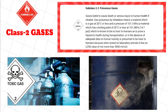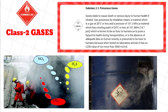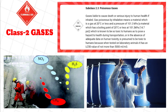Subclass 2.3, Poisonous gases: gases liable to cause death or serious injury to human health if inhaled. Gas poisonous by inhalation means a material which is a gas at 20°C or less and a pressure of 101.3 kilopascals, or a material which has a boiling point of 20°C or less at 101.3 kilopascals (14.7 pounds per square inch), which is known to be so toxic to humans as to pose a hazard to health during transportation, or in the absence of adequate data on human toxicity, is presumed to be toxic to humans because when tested on laboratory animals it has an LC50 value of not more than 5000 ml/m³.